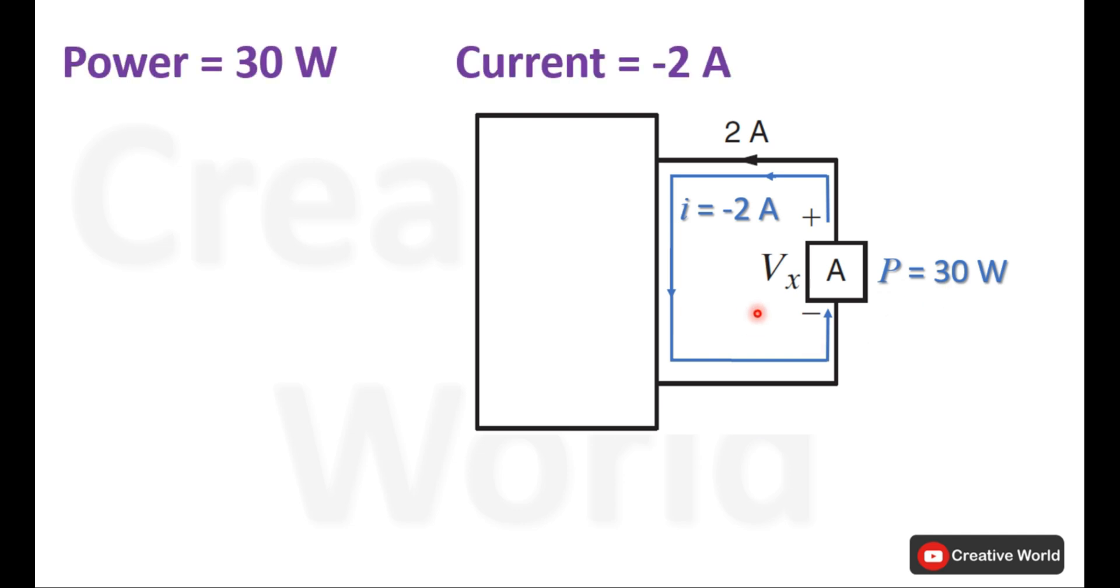The data retrieved from this scenario is power equals 30 watts which is positive. It indicates the power is being absorbed by element A and the current is minus 2 amperes. Using power formula P = V × I, entering the values of power and current, and dividing this current on both sides to get the value of voltage which is minus 15 volts.